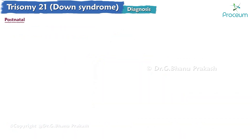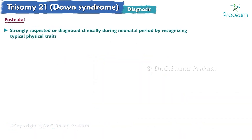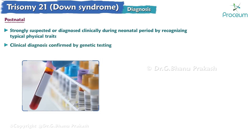Postnatal: Trisomy 21 can be strongly suspected or diagnosed clinically during the neonatal period by recognizing the typical physical traits. Clinical diagnosis should be confirmed by genetic testing, typically karyotype from the infant's blood or tissue.